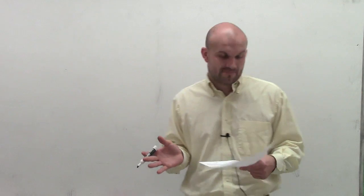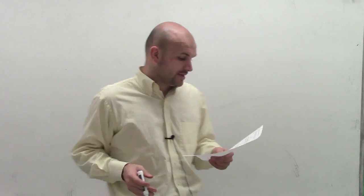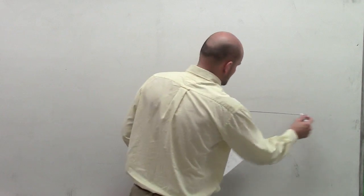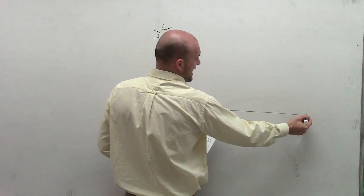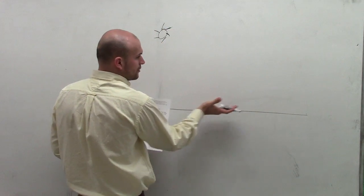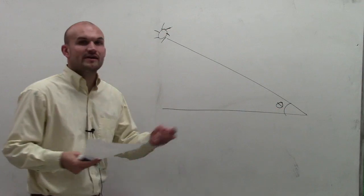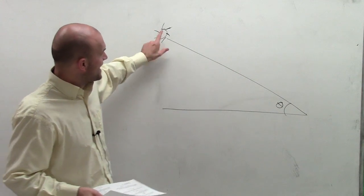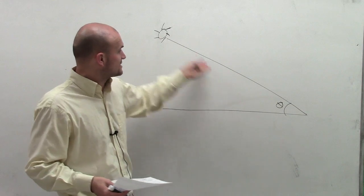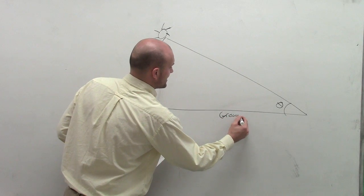There are a couple of main things we have here. It says the angle of elevation. The angle of elevation is going to be your angle above your horizontal line. So first we're going to have our horizontal. Then we're going to have a sun, because we want to find the angle of elevation of the sun — that means from the horizon, we're going to be looking for this angle. Angle of elevation is always your angle above your horizontal line.